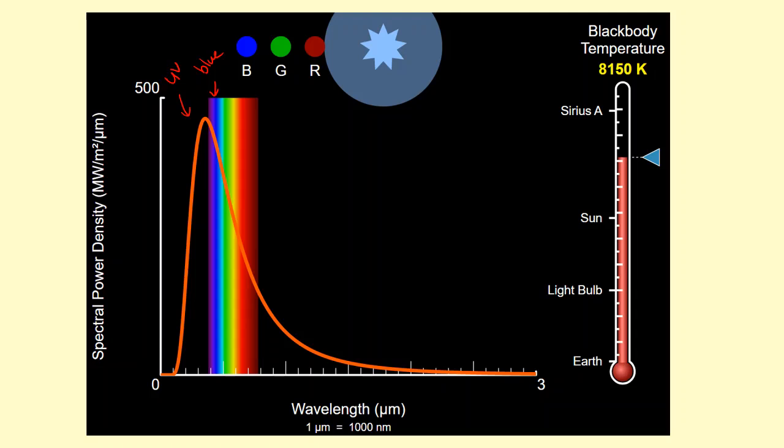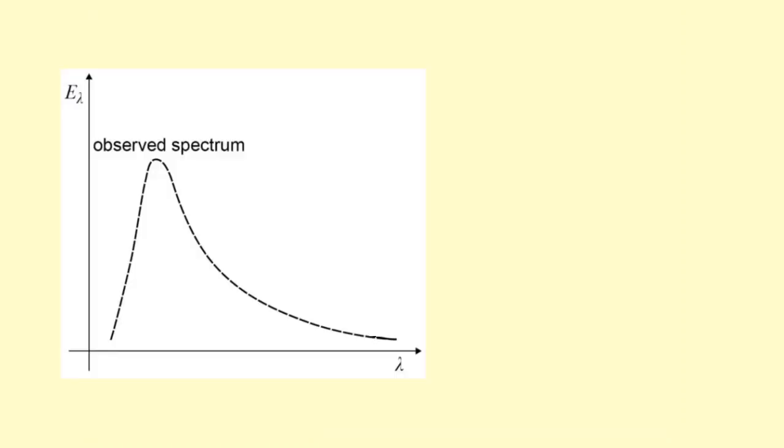This graph shows the energy emitted at each wavelength from a black body, and this was actually observed. However, this was predicted according to wave theory. By classical we mean wave theory, like Huygens' wave theory.